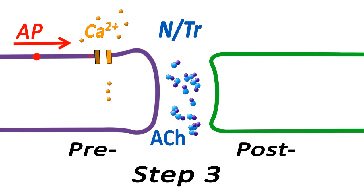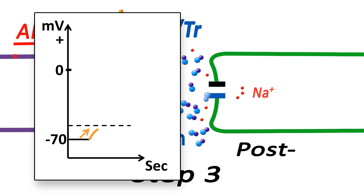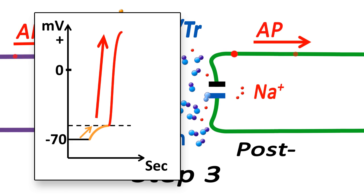Step 3. Here the signal is ACh. It binds to the receptors in the postsynaptic membrane. In response, sodium ion channels open, and sodium ions flow into the postsynaptic neuron from high to low concentration areas, depolarizing the membrane to the threshold and generating a postsynaptic AP.